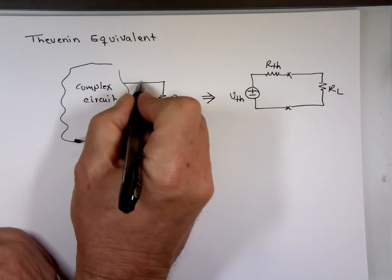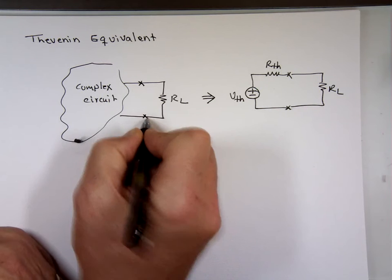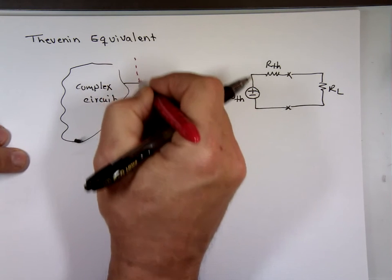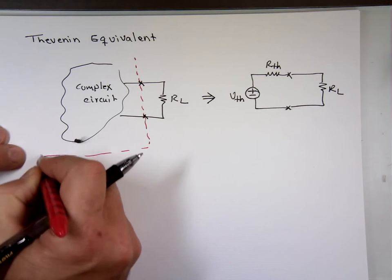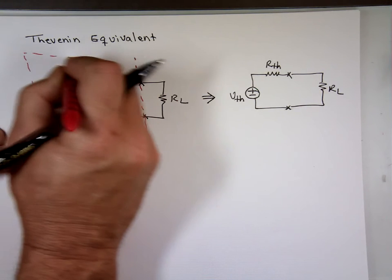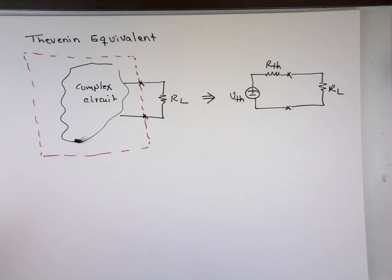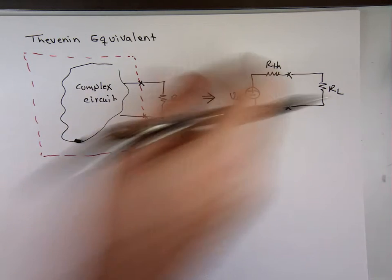So basically, we're taking that circuit, cutting it right there. We're saying, I'm going to replace this entire complicated circuit with one voltage source and one resistor. The question is, how do you find V-Thevenin, and how do you find R-Thevenin?